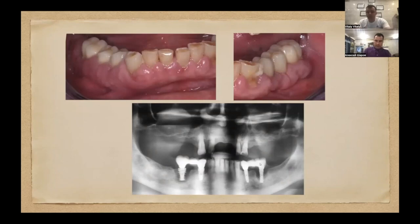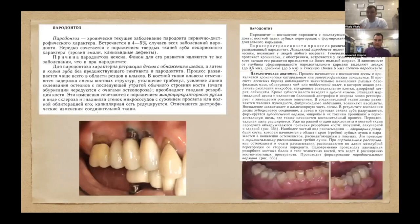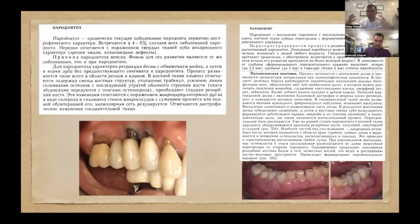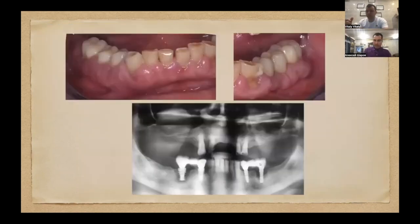Мы говорим о том, что у пациента есть некоторая особенность иммунного ответа. Но при этом есть фон, бэкграунд у этих пациентов — начиная с маленькой биологической ширины, тенденции того, как они отвечают, и, соответственно, состава флоры.